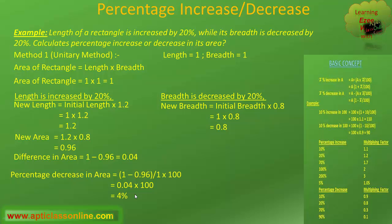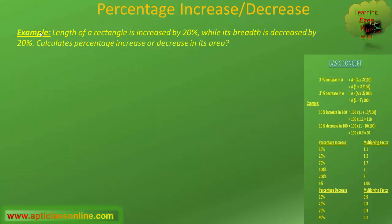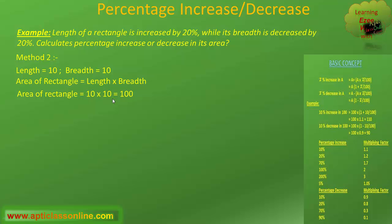We can also get this answer directly by using the concept of multiplying factor. That is, we know that for multiplying factor 0.9, the corresponding percentage decrease is 10%. Similarly, for 0.96, the percentage decrease will be 4%. Now we will calculate the same question with the help of another method, Method 2. In this method, we assume the initial value of the length and the breadth as 10. So, if the length and the breadth are 10, then the area of the rectangle will be 100, as the area of a rectangle equals length into breadth.